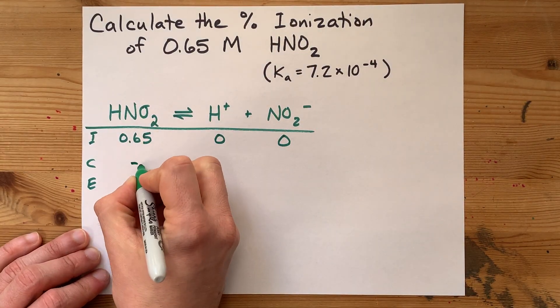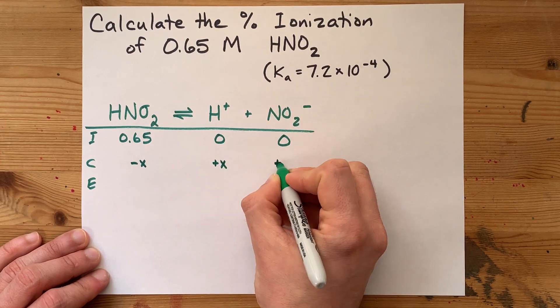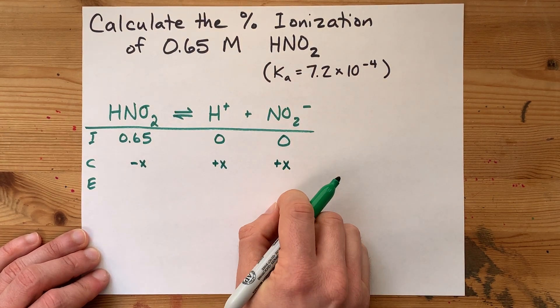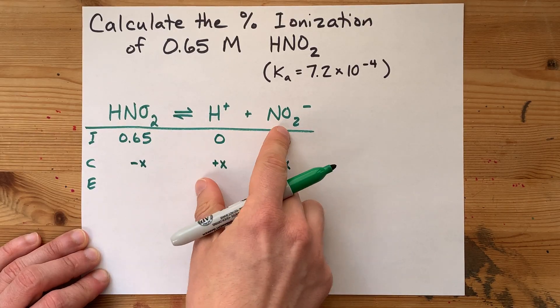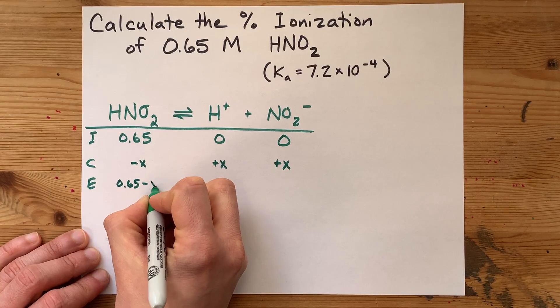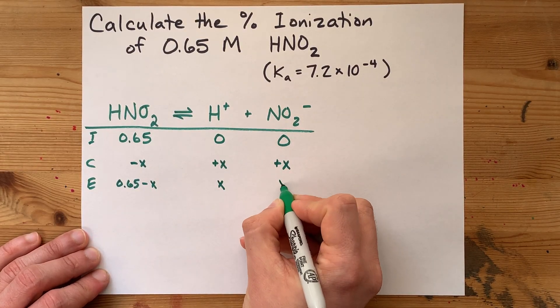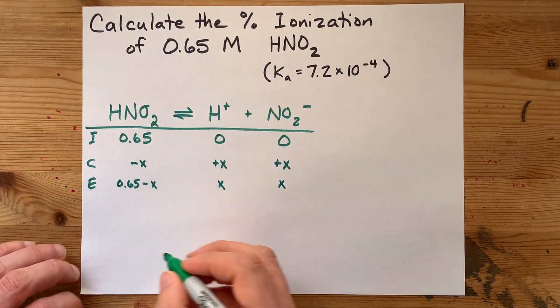We're going to lose some of it, and we're going to gain that many H's and that many NO2's because each of these is breaking up into one of those and one of those. So the equilibrium concentrations are 0.65 minus X, 0 plus X is X, and 0 plus X is X.